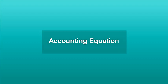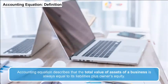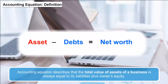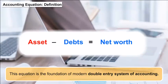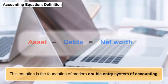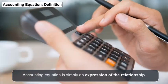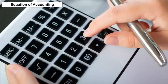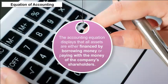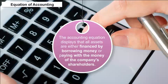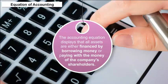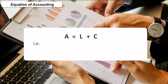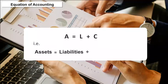Accounting Equation: The accounting equation describes that the total value of assets of a business is always equal to its liabilities plus owner's equity. This equation is the foundation of the modern double entry system of accounting. It is simply an expression of the relationship among assets, liabilities, and owner's equity. The accounting equation displays that all assets are either financed by borrowing money or paying with the company's shareholders' money. The general form is: A = L + C, that is, Assets = Liabilities + Owner's Equity.